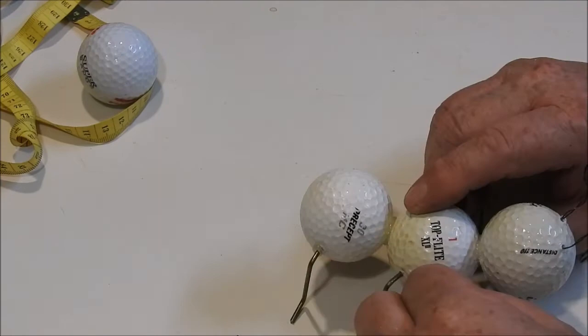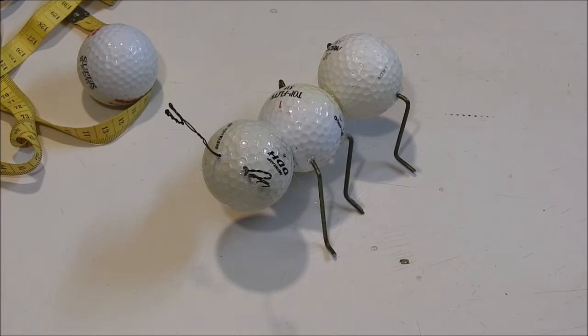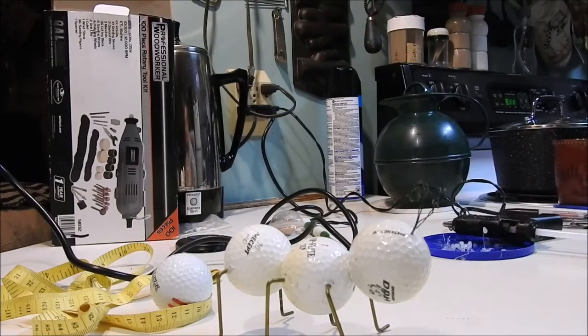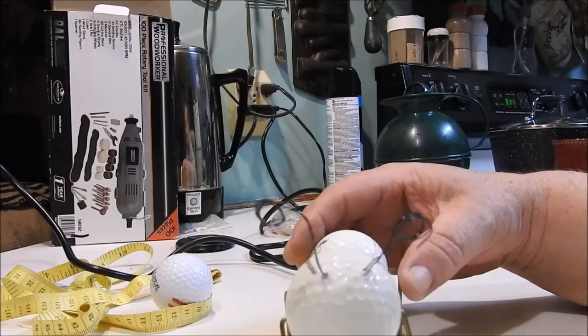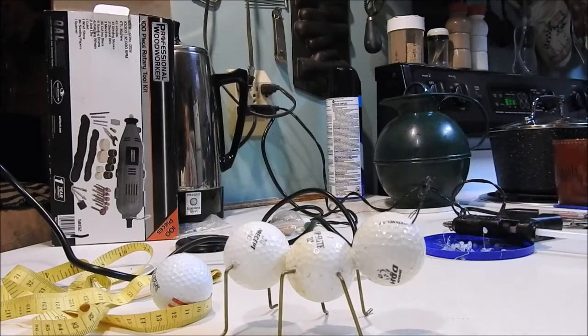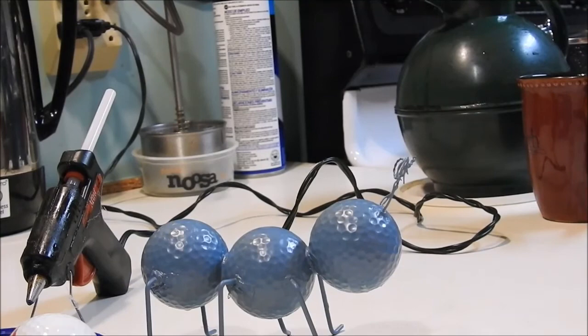Now, we're just going to let this set for a little bit and let it completely dry. If you haven't realized by now, we're making an ant, a garden ant, out of the golf balls. Anyway, that's what it should look like. And then you've got to let it dry really good. I'm going to take it outside and paint it real quick.